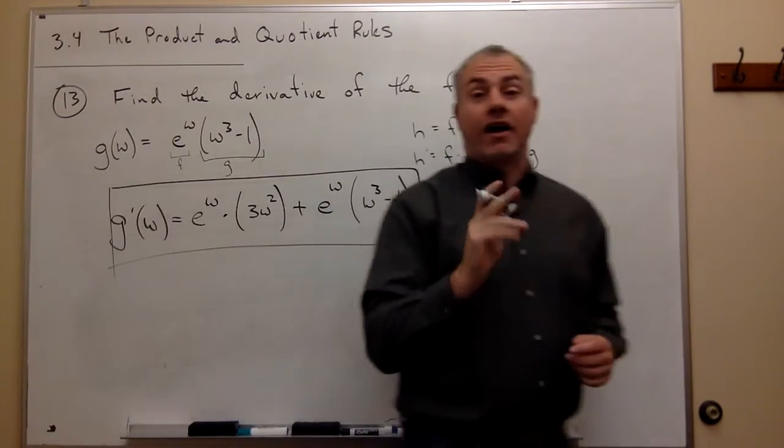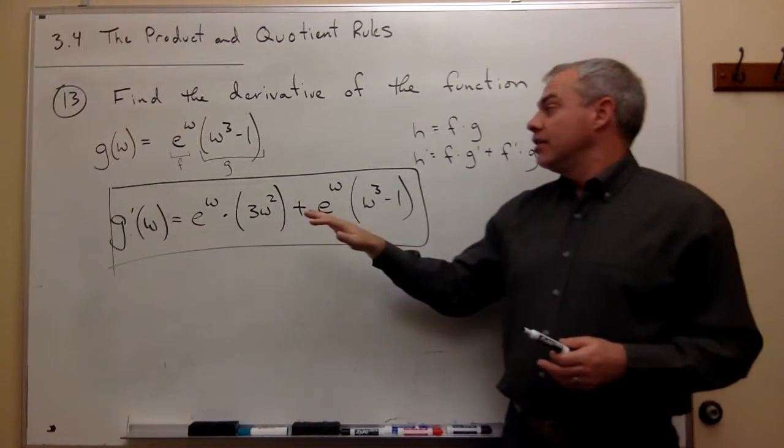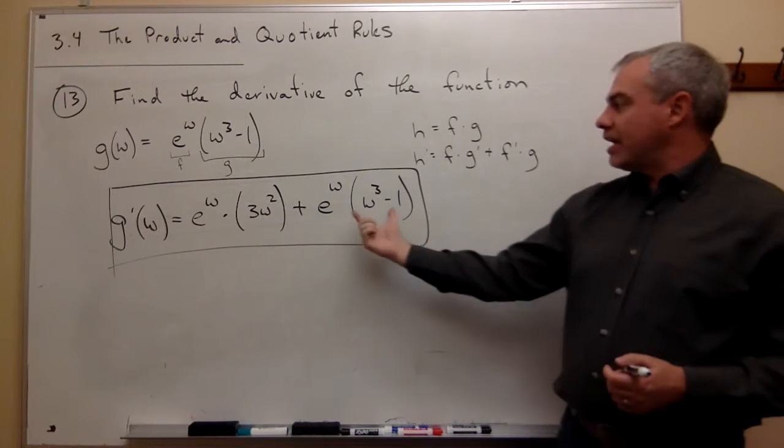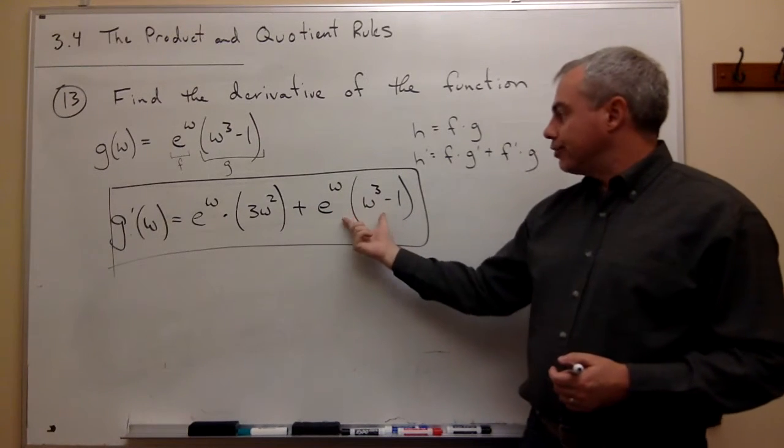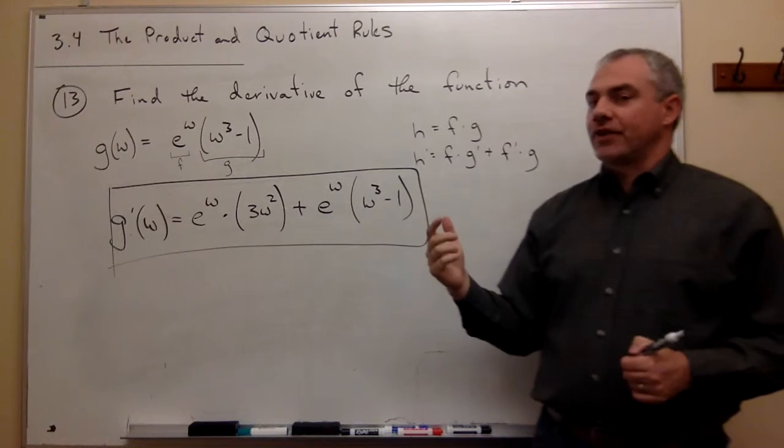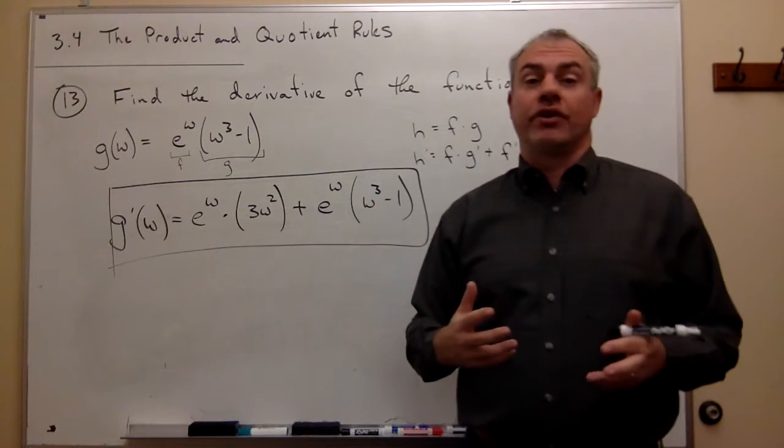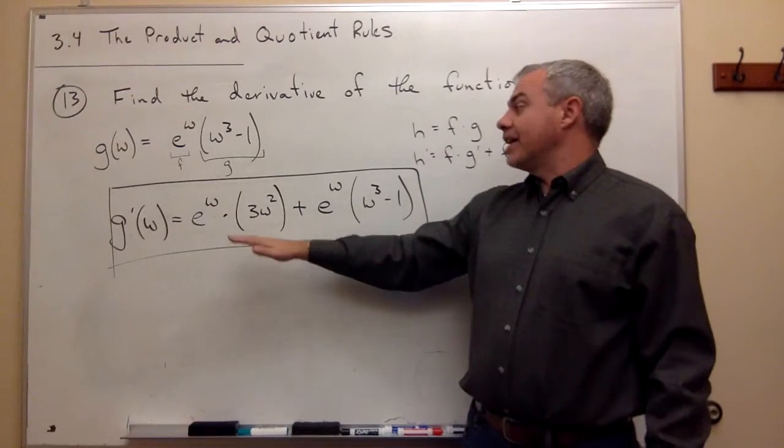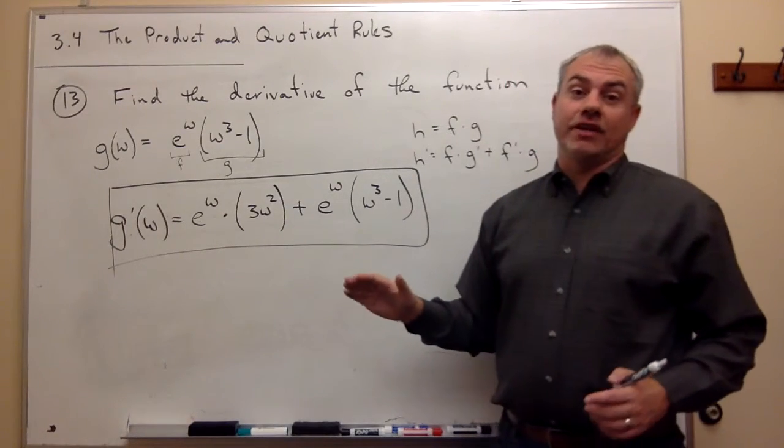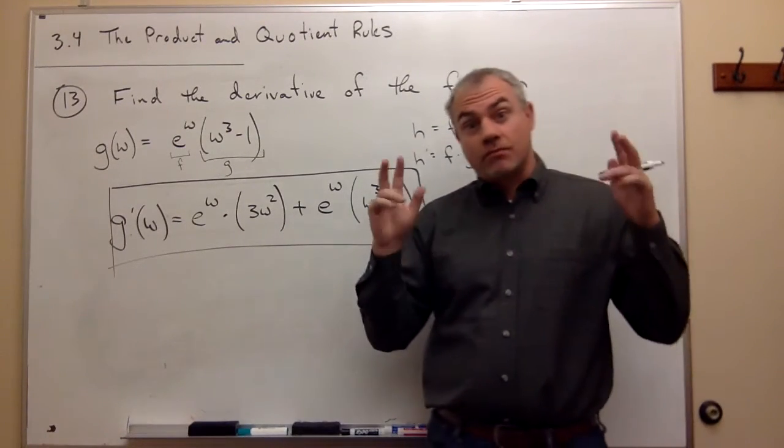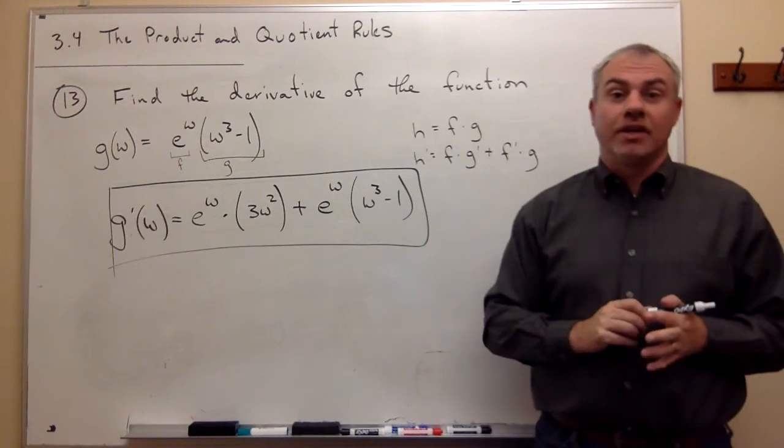And that's our answer. Now, really quick, could I simplify this a little bit? I could multiply the e to the w through here and do some simplification. True, that's a simplified form of the derivative, but bottom line, this is the derivative. It may just not be in its most simplified form, and that's okay.